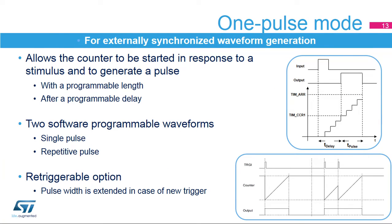One pulse mode is used to generate a pulse of programmable length in response to an external event. The pulse can start as soon as the input trigger arrives or after a programmable delay. The compare one register (CCR1) defines the pulse start time, while the auto-reload register (ARR) defines the end of pulse. The effective pulse width is the difference between ARR and CCR1. The waveform can be a single pulse or a continuous pulse train started by a single trigger. One pulse mode also offers a re-triggerable option, where a new trigger arriving before the end of the pulse resets the counter and extends the pulse width accordingly.